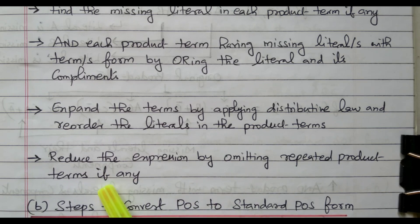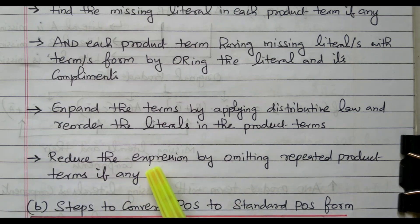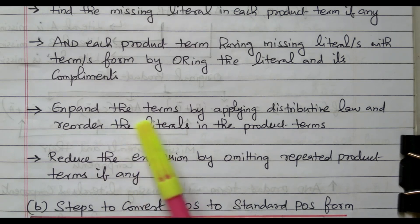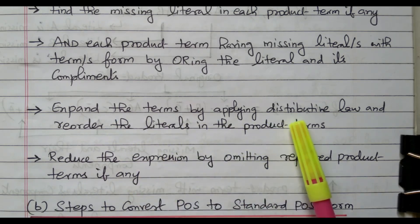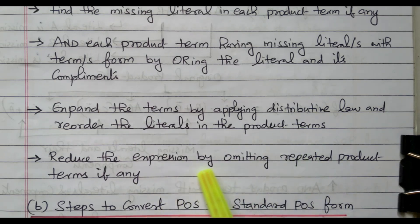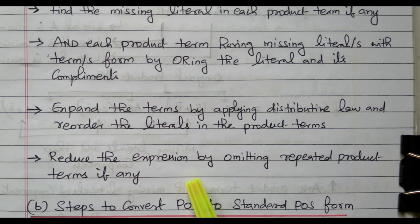So first we need to identify if any missing literal is there. If any missing literal is there, it should be ORed with its complement. Then apply the distributive law to expand. If any repeated terms are there, they should be omitted. We will see an example so that you are able to understand easily.